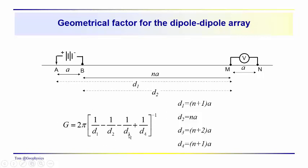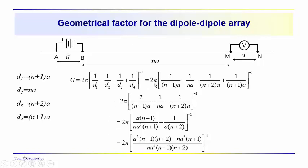So this is our basic definition for the geometrical factor, we're just going to plug and chug, and this just becomes an algebra problem basically. What we have here is substituting for d1, d2, d3, and d4, we've got 1 over n plus 1a minus 1 over na minus 1 over n plus 2a plus 1 over n plus 1a to the minus 1 power.